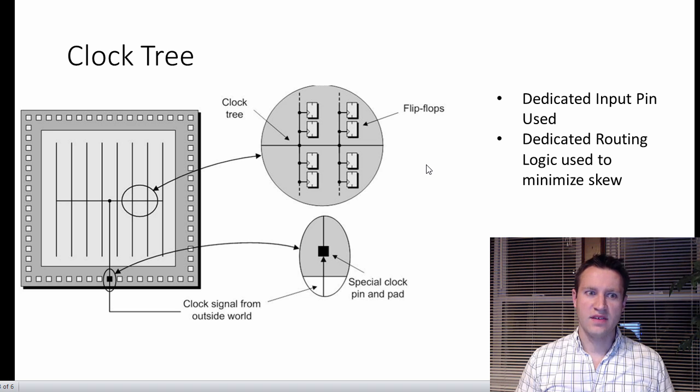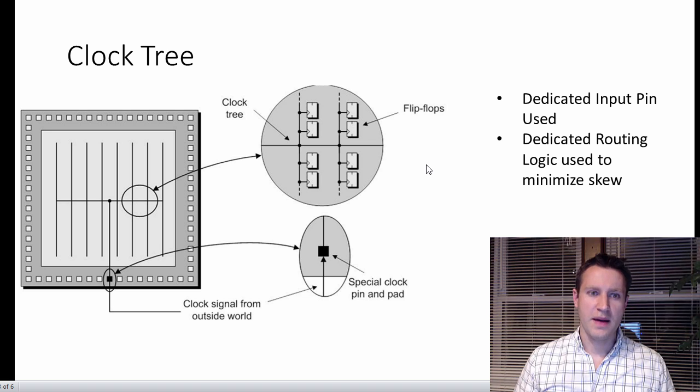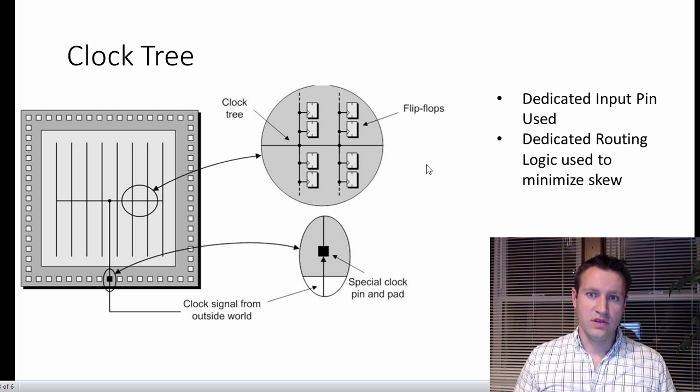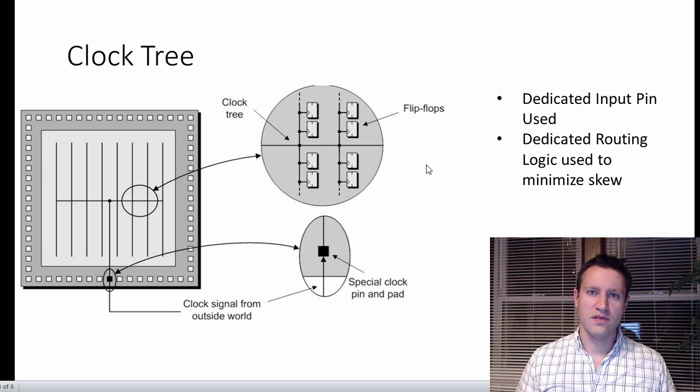You can't exactly get the exact same time, but you can get pretty good. The routing logic inside of FPGAs is good enough that it's almost instantaneous. It's almost the same time for all the flip-flops. And where it's not instantaneous, the tools will actually tell you, they'll take care of that. So you can tell the tools, I'm running at a 50 megahertz clock domain, and they'll be able to do, during the place and route process specifically, tell you if your FPGA design is going to meet timing.